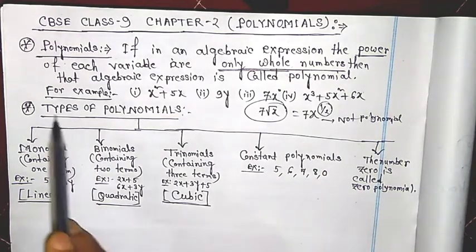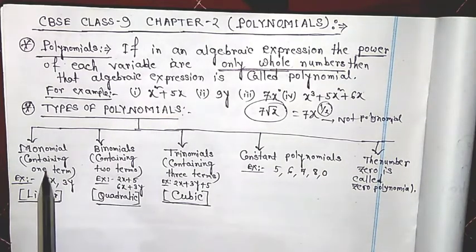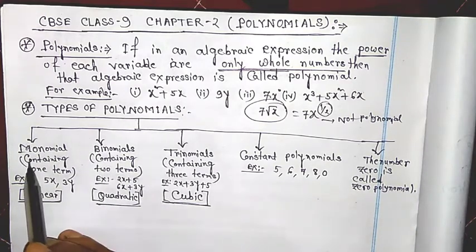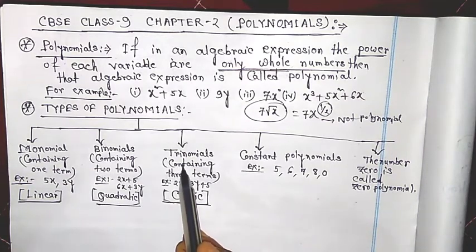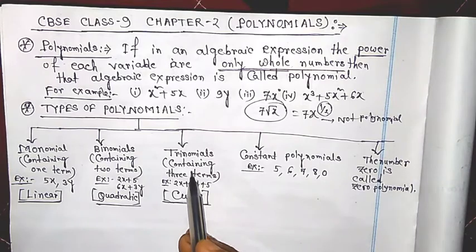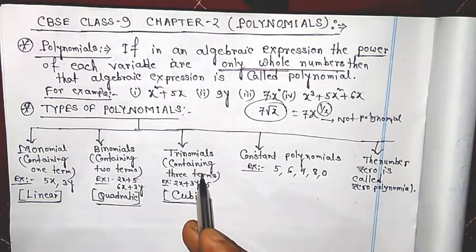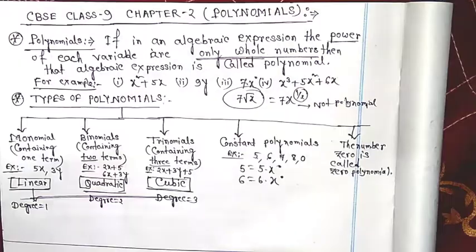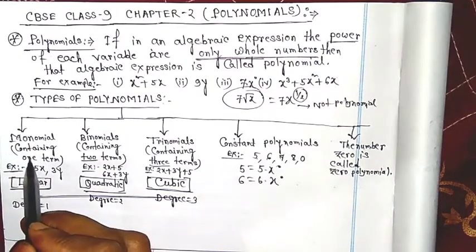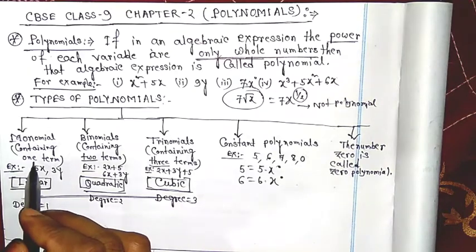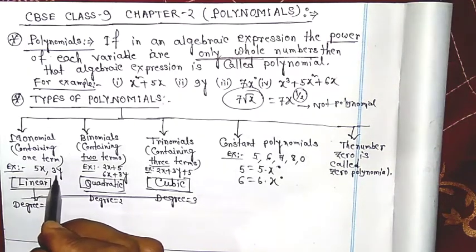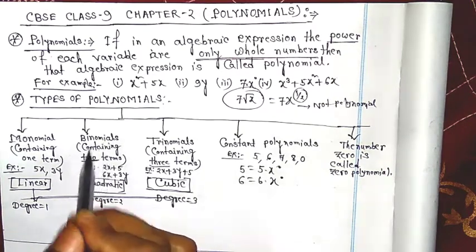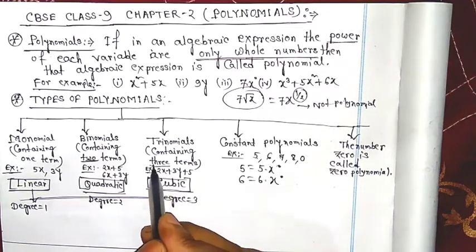Next, I discuss the types of polynomial. There are mainly three types: monomial, binomial, and trinomial — already discussed in Class 8 algebra. A monomial is a polynomial containing only one term. A binomial contains only two terms. A trinomial contains three terms.